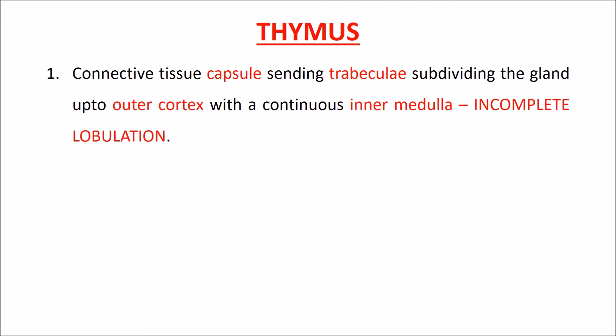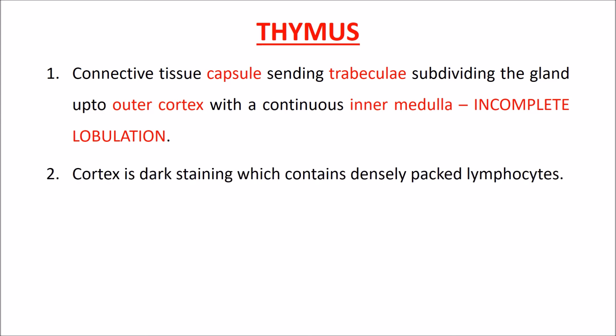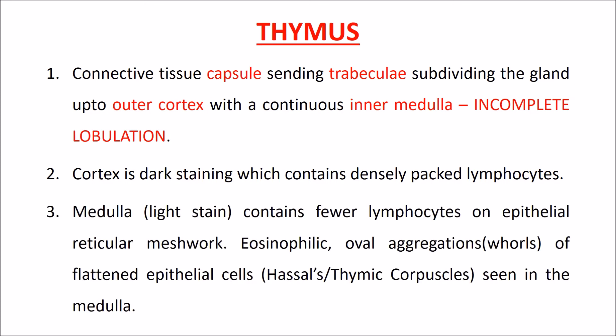A connective tissue capsule sends trabeculae subdividing the gland into an outer cortex with a continuous inner medulla — known as incomplete lobulation. The cortex is dark-staining and contains densely packed lymphocytes. The medulla is lighter-stained and contains fewer lymphocytes on an epithelial reticular meshwork. Eosinophilic oval aggregations of flattened epithelial cells, called Hassall's corpuscles, are seen in the medulla.